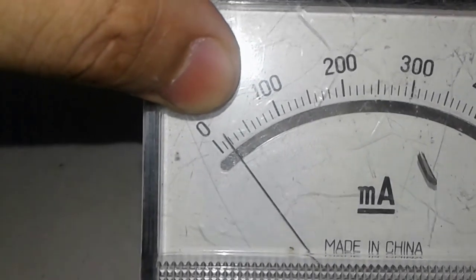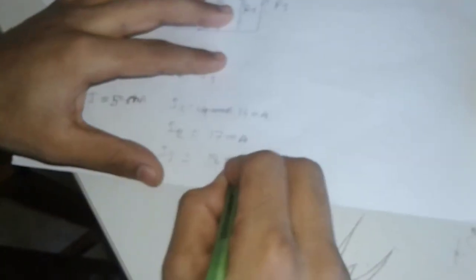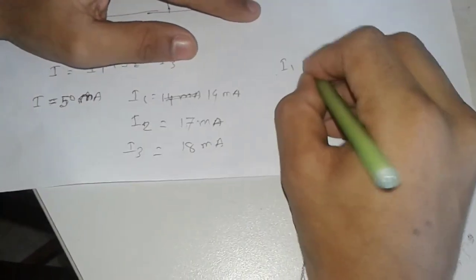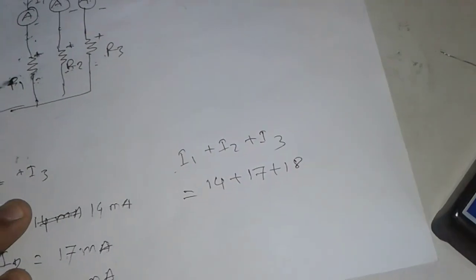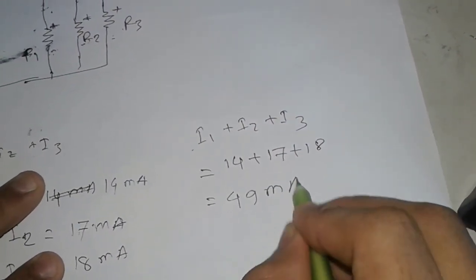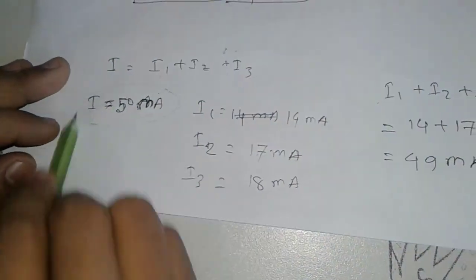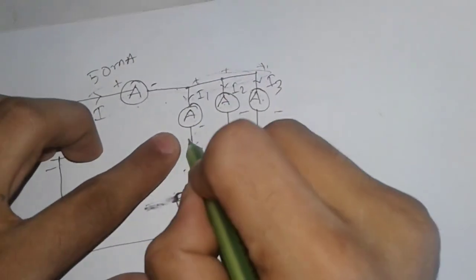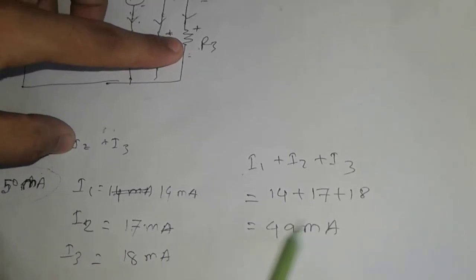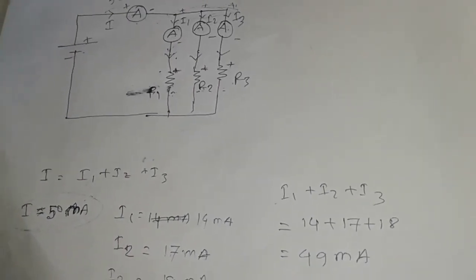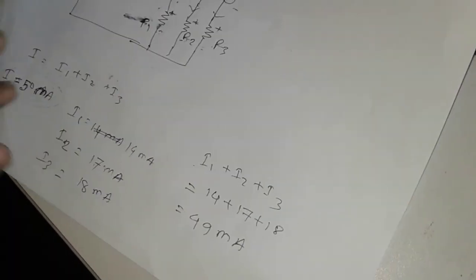This is 18 mA. So we have total I1, I2, I3. 14, 16, 18. We have 48 mA. So we have total current we have 50 mA. Then we have current we have in each branch. Each branch is around 14 mA. I1 with 14 mA and I3 with 18 mA. And so we have that it is highly accurate. We have that it is practical. We have that way to define it with digital analog meter.